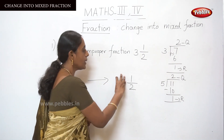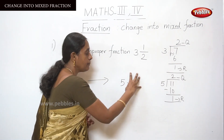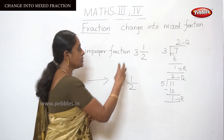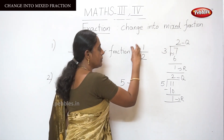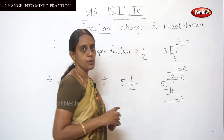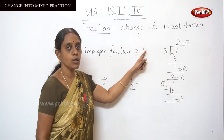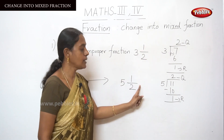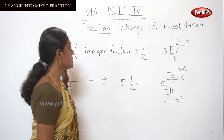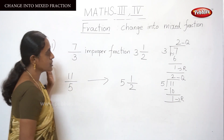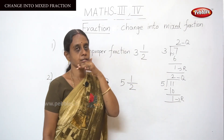A mixed fraction is a combination of a whole number and a proper fraction. Here, 2 is a whole number combined with the proper fraction 1 by 5. A proper fraction means the numerator is smaller than the denominator. Thus we have changed the improper fraction into a mixed fraction.